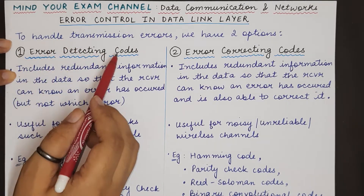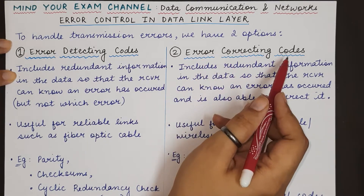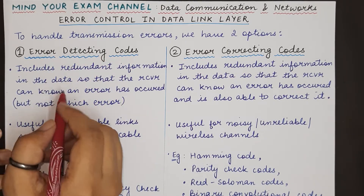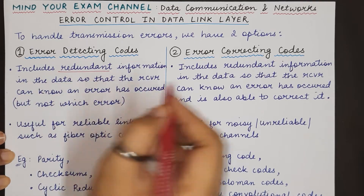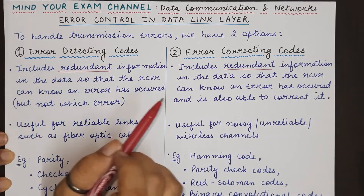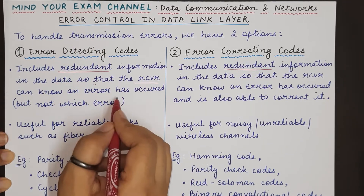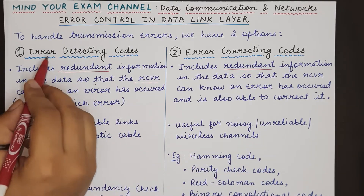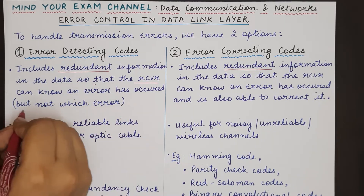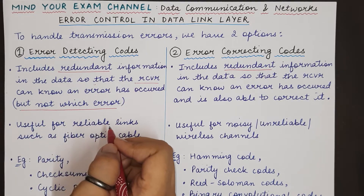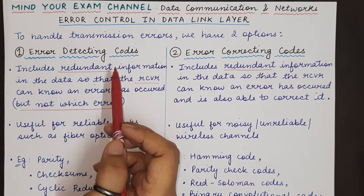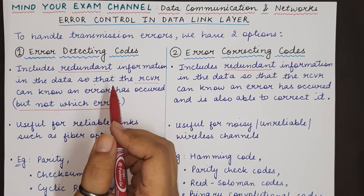What is the difference between them? Both error detecting and error correcting codes include some redundant information, but the redundant information in error detecting codes is just enough so that the receiver can know that some error has occurred. Error detecting codes only tell the receiver that some error has occurred — they do not inform the receiver which bits have been changed or what modification occurred from the original data.